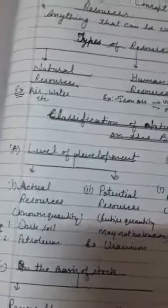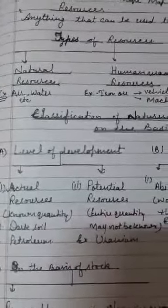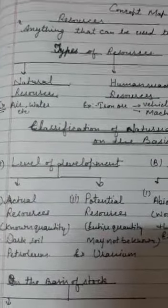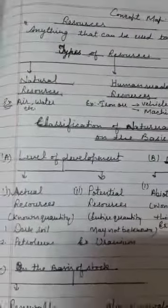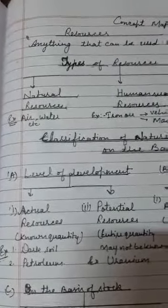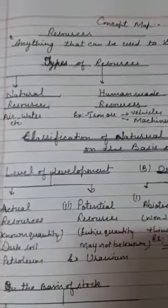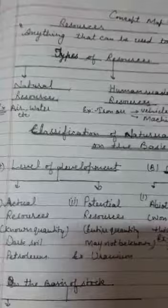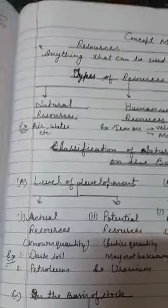Actual resources means ki kuch resources aise hote hain jinkhi accurate quantity ya near about quantity hamein pata hoti hai, ki yeh resource yahan hai. Richest area iska yahan hai. Just like petroleum — petroleum richest area is in West Asia. And dark soil, mostly plateau in Maharashtra. Actual resources are those resources whose quantity is known. Jinkhi hamein quantity ke baare mein pata hota hai, unki using ke baare mein hamein pata hota hai — ki petroleum ka use yahan hota hai, petroleum yahan se extract hoga, phir iski yahan refinery hogi. Toh yeh sab jo processing hoti hai, woh hain actual resources.